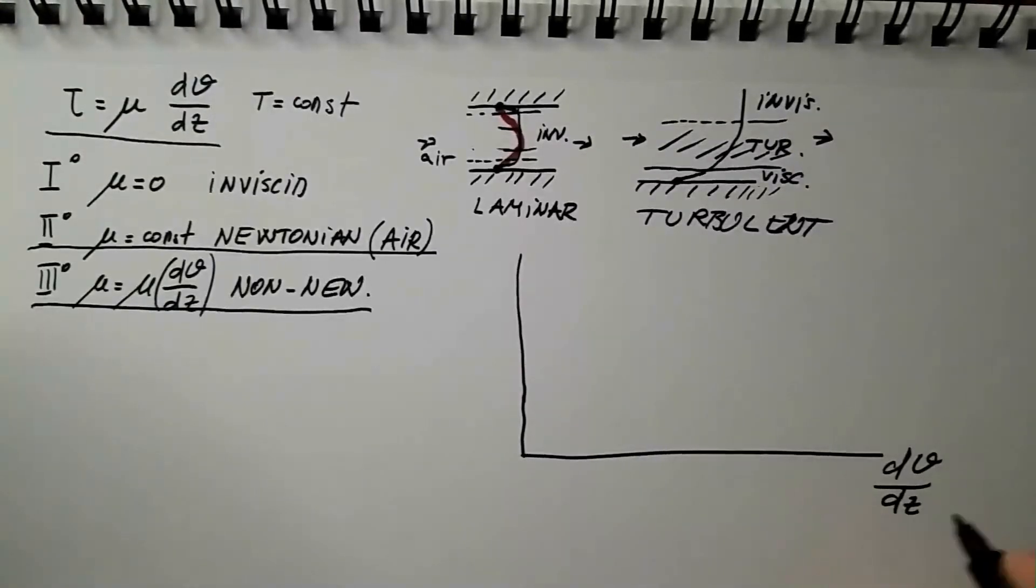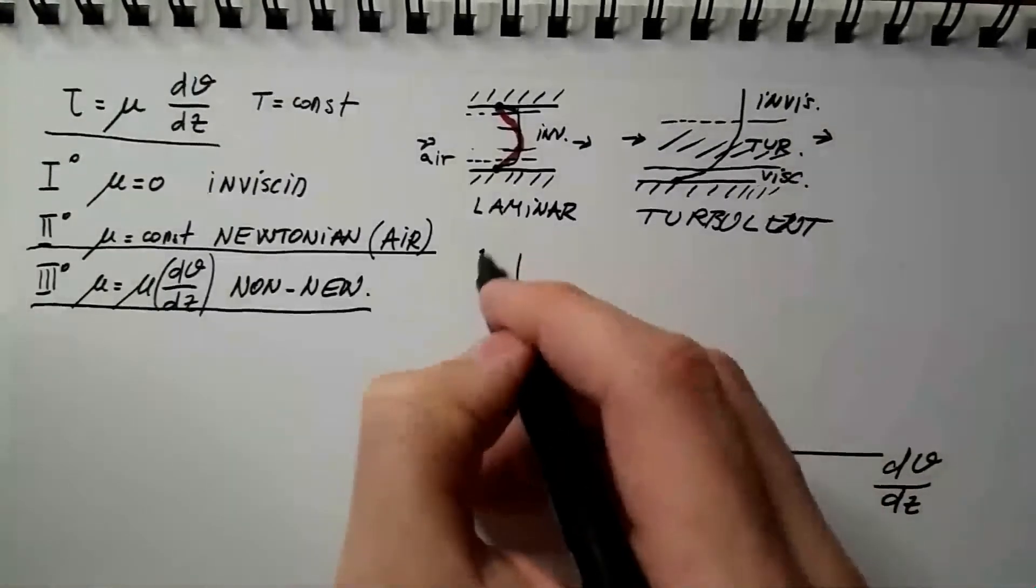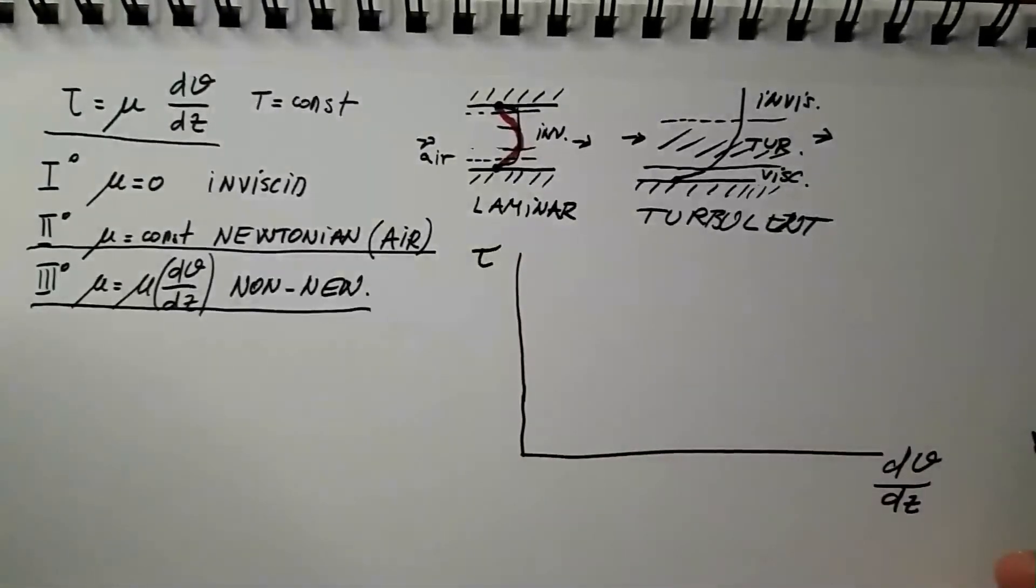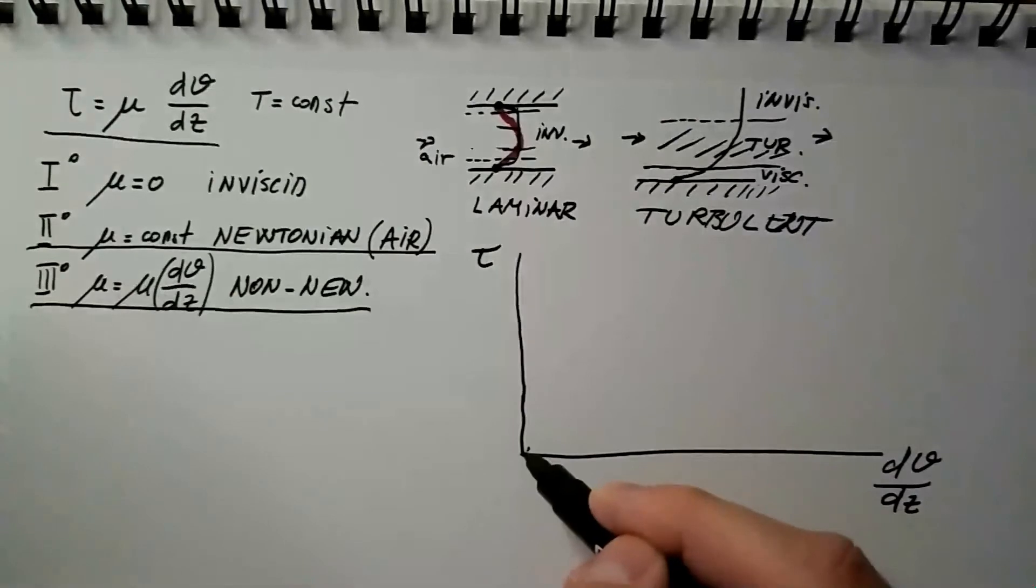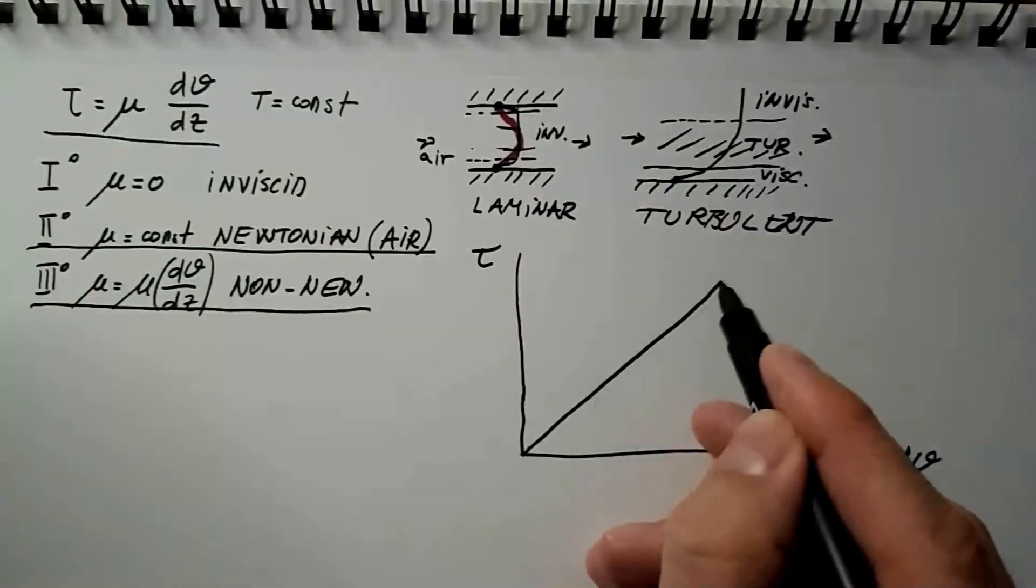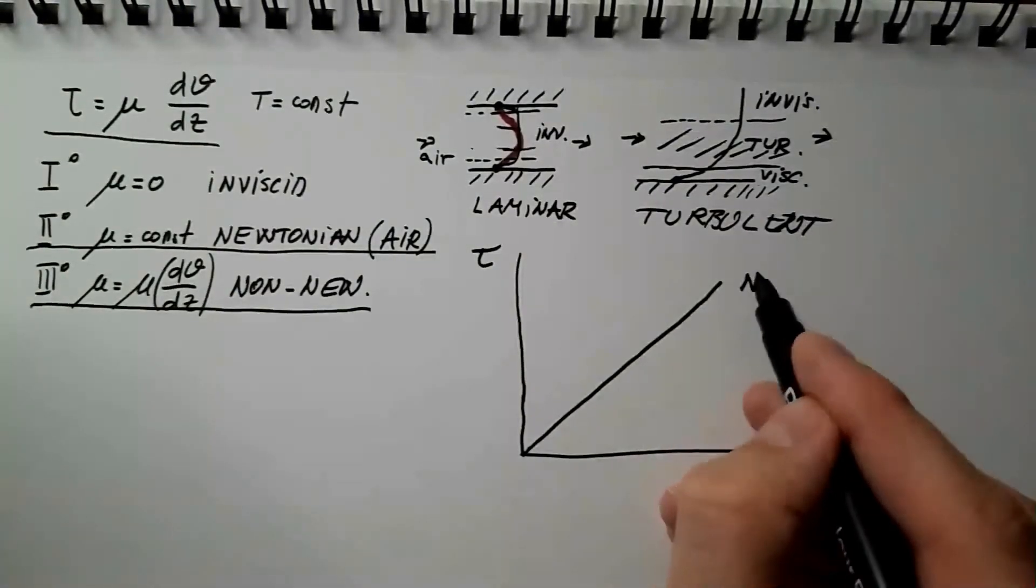If I plot here dv over dz, which is velocity gradient, and here I will plot tau, which is my shear stress, then for Newtonian fluids, this relationship is linear. We just talked about it. So, these would be Newtonian fluids.